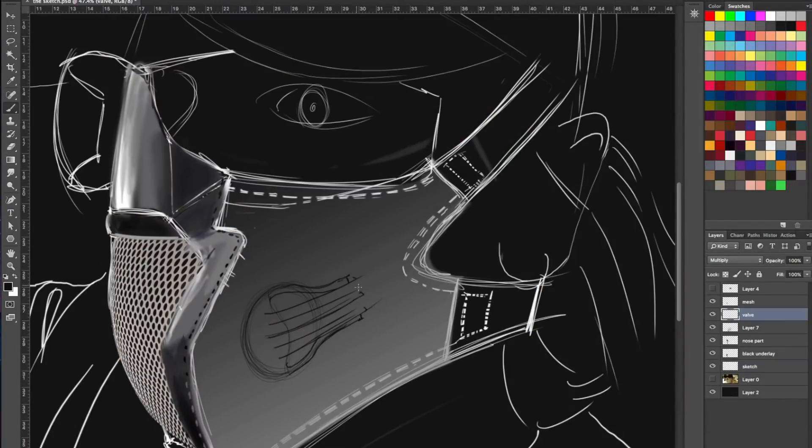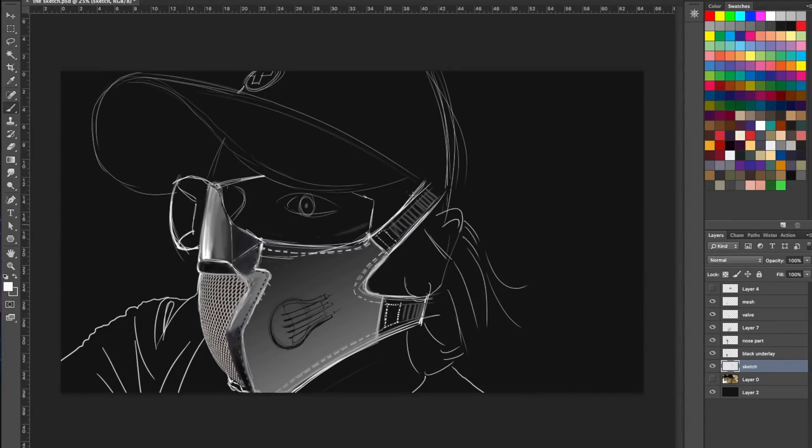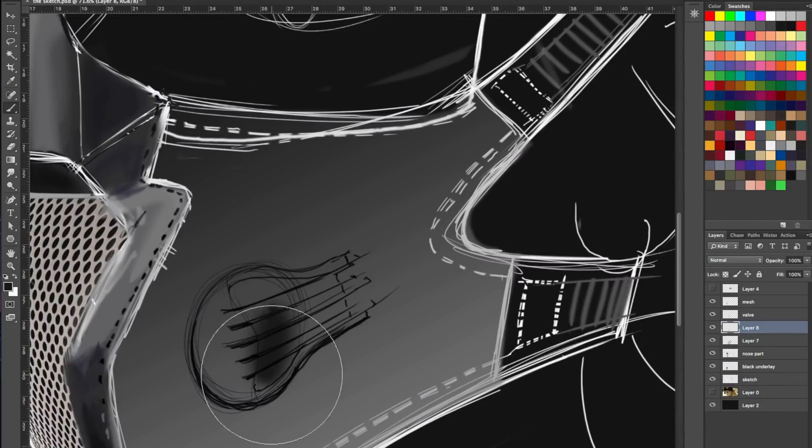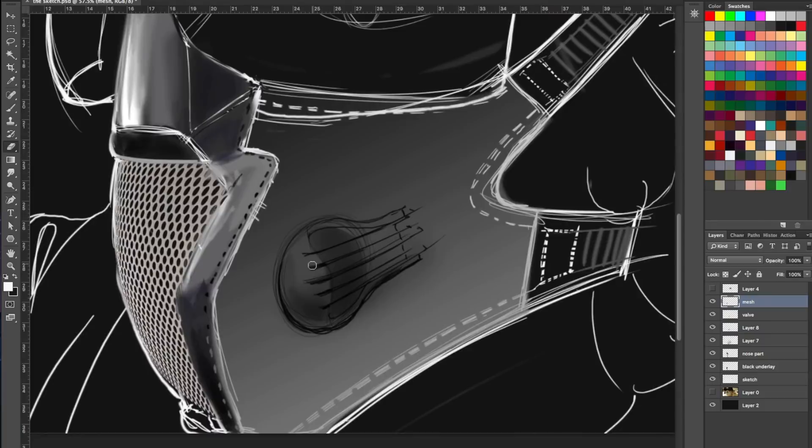For phase two of this project we're going to sketch right on top of one of the images from the proof of concept. Now we're taking a look at the aesthetics, functionality, and manufacturability of such a product. We're going to have some vents for the person to breathe.